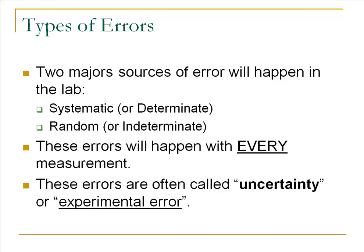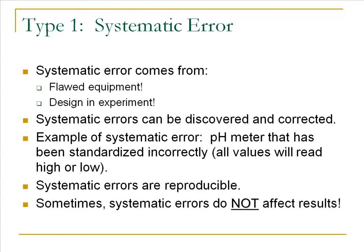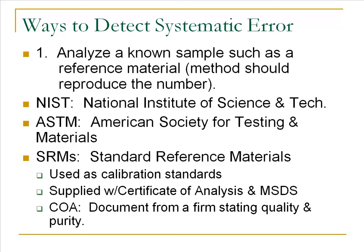Statistics is the purpose of the next section. With systematic error, we've discussed ways to fix it, and number one is to analyze what we call a known standard. This allows us to determine if the method, the procedure, and you as an analyst can do the job.